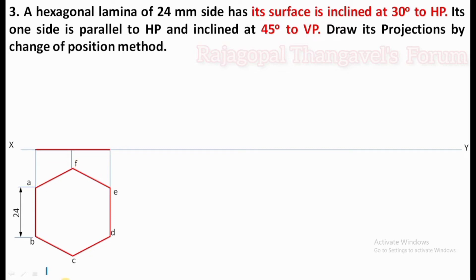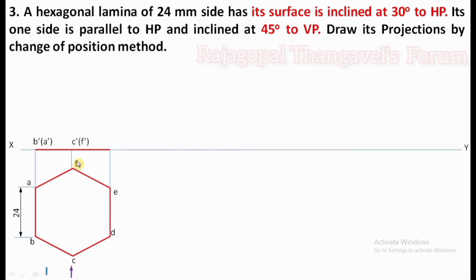As an observer you are standing here, so the visible corners are B, C, D. A, F, E are invisible. You can see the arrow head — you are standing here, so B, C, D is visible and A, F, E is invisible and must be represented in brackets. That's why B' and A' must be in brackets. C' and F' are invisible in brackets. D is visible, E is invisible, so E' is invisible and represented in brackets. This is step number two.